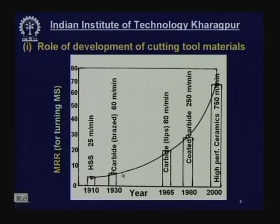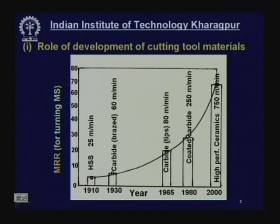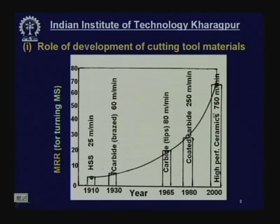In 1930, the advent of cemented carbides made by brazing allowed cutting velocity of 60 meters per minute. By 1965, up to 80 meters per minute. Then in 1980, the cutting velocity jumped to 250 meters per minute through the advent of coated carbides, and by 2000, high performance ceramics enabled reaching 750 meters per minute — a tremendous cutting velocity producing very high productivity.